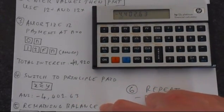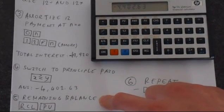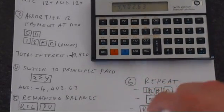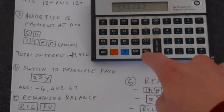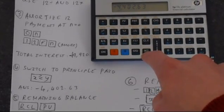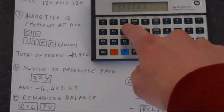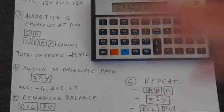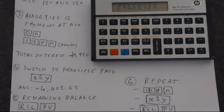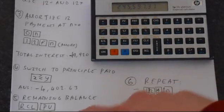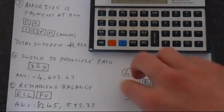And we can also calculate the remaining balance simply by pressing recall and then present value. So recall is sort of a remember button I like to think of it as. So we're not wanting to change that value, so press recall first. And that says we've got $245,597 and a bit. That's what we've got left to pay.